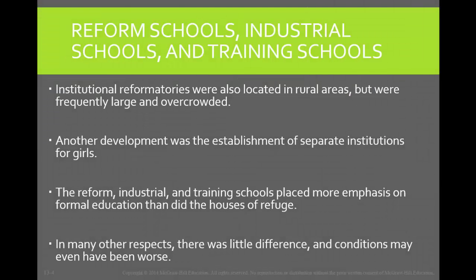Once it was evident that the houses of refuge were no longer working, reformers started to turn to a different type of solution. Institutional reformers moved juveniles out of the city and into more rural areas. The institutions were often very isolated from neighbors or from any oversight. The lack of supervision allowed the institutions to become more overcrowded and sometimes even unsafe. Medical conditions were poor and discipline was often very high. Juveniles who lived in these homes were often in danger of serious injury even though they were receiving educational training.